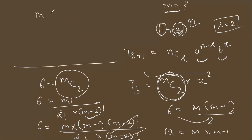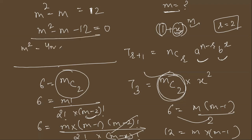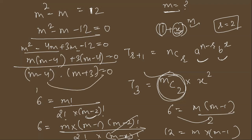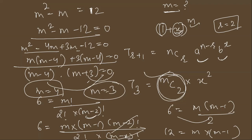Expanding: m(m-1) = m² - m = 12, so m² - m - 12 = 0. Solving by middle term splitting: m² - 4m + 3m - 12 = 0, taking common gives (m - 4)(m + 3) = 0. This gives m = 4 or m = -3. Since we need the positive value of m, the final answer is m = 4.